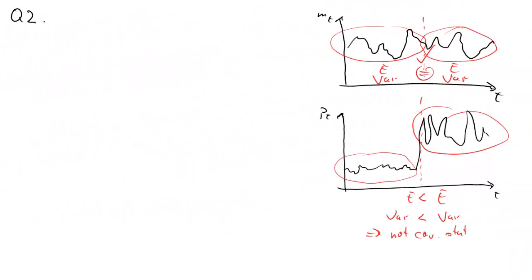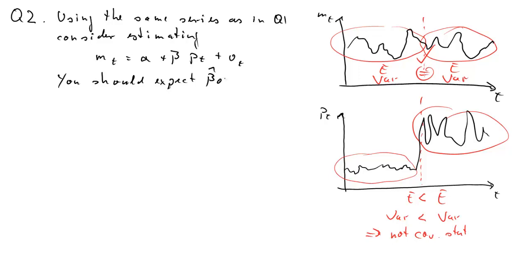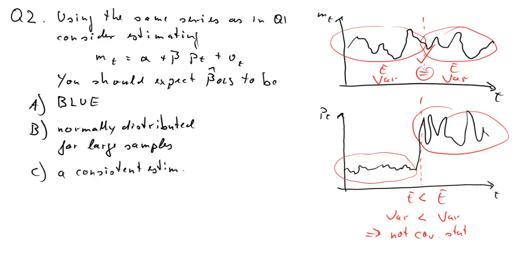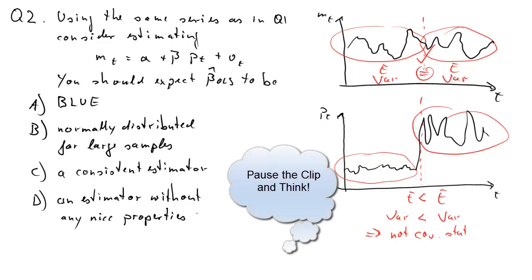So here comes the second question. We are using the same time series as the ones we used in question 1. And now consider estimating the following model. MT as dependent variable, PT as explanatory variable, a linear model. Now, you should expect beta hat OLS to be which of the following: A, BLUE; B, normally distributed for large samples; C, a consistent estimator; or D, an estimator without any nice properties? Pause and think.